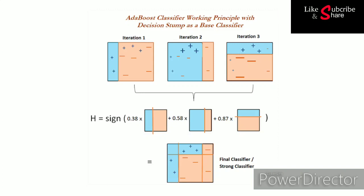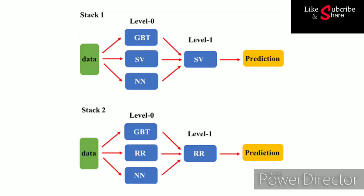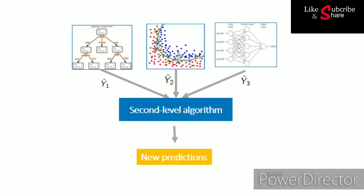Now coming to stacking. In stacking, we try to extract more and more features from the given data by using several models. These extracted features are then used for the next layer of models. For example, the first layer might include models like XGBoost, random forest, and extra trees — different classifiers trained on the same training dataset. We then extract the predictions from all these models, which are basically probabilities for each observation. These probabilities from all three classifiers are used as features for the next layer.